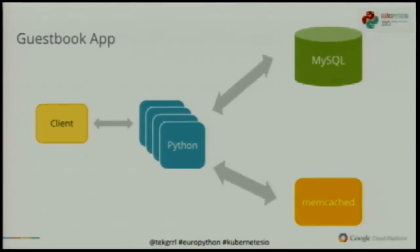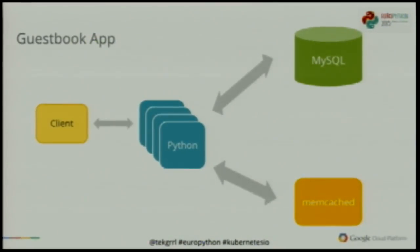Let's look at a simple application and how we can do this externally with containers and through Kubernetes. This is a very simple pattern: we have Python in the middle, MySQL, Memcache, and a client. We have many Python instances running — this could be many instances of Flask. We're probably going to want to scale this on demand. We may not want to scale MySQL that much. Let's keep it simple: one MySQL, one Memcache, and a few Python instances at the front end.